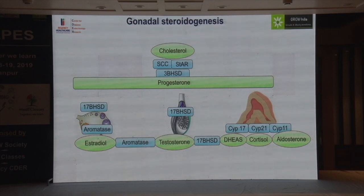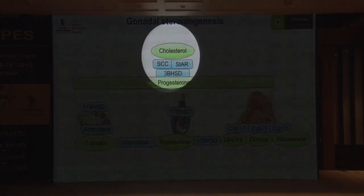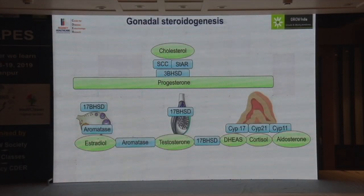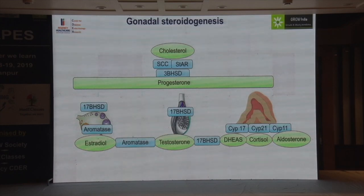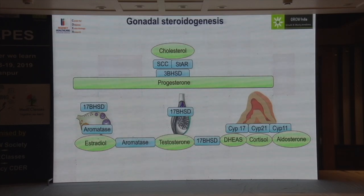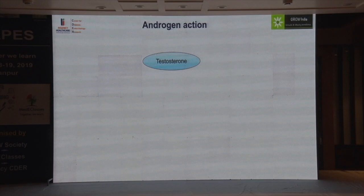There is one exception: 3-beta HSD deficiency can cause virilization in girls. Why? Because it produces DHEA, which is peripherally converted into androgens. This peripheral conversion is sufficient to cause virilization in girls but does not cause any change in boys. This is one condition we have to be very careful about.